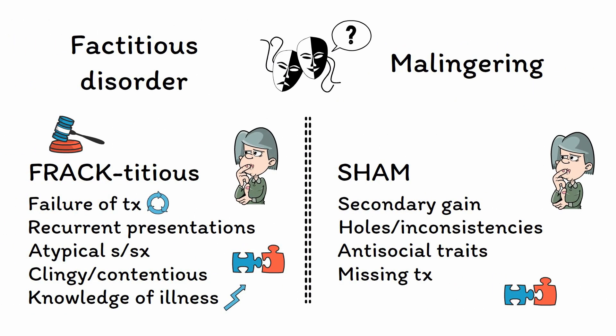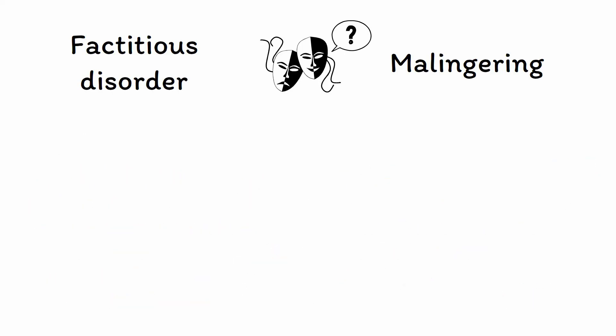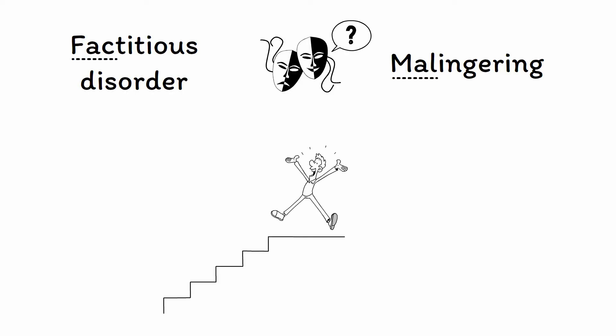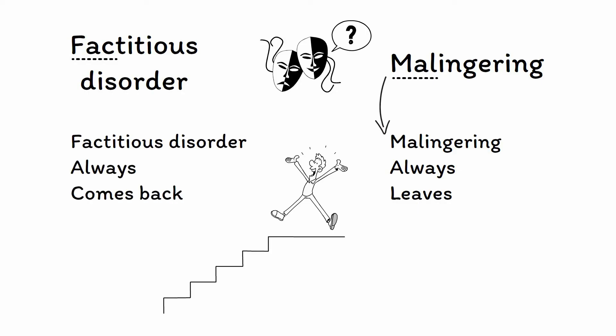So that's factitious disorder and malingering. While we have grouped them together based on the fact that they both involve intentional feigning of illness, they really are two separate conditions that should be considered independently. One key difference has to do with the patient's pattern of behavior after their need has been met. Focus on the first three letters of each word to remind yourself that someone who is MALingering always leaves once they get what they want, because there is no longer a reason for them to seek medical care, while someone with FACTitious disorder always comes back for more, as their primary goal is the medical care itself.